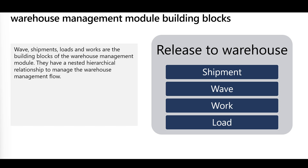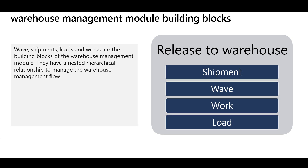Before working with or implementing the Warehouse Management module, you should be aware of some important terms — the building blocks of the module. The first term is the shipment, which is a single delivery to the same customer and destination, and can consist of one or multiple sales orders. Then we have waves: a wave is one or more shipments representing a group of order lines released to the warehouse at the same time for picking. Work is the transaction performed by warehouse workers to complete a specific business process, such as purchase receiving or sales order picking. Finally, a load can have one or multiple shipments grouped together, typically going out on a single truck — it is the physical object like a container, parcel, or truck that carries items to the customer.